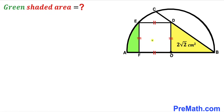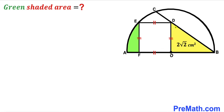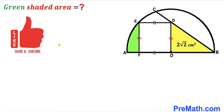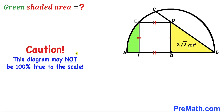Welcome to pre-math. In this video we have got a white square ODEF fully inscribed in between a semicircle with center O and chord BC. As a result we get a yellow shaded triangle BOD, and the area of this yellow shaded right triangle has been given to us as 2√2 cm². Our task is to calculate the area of the green shaded region. Please keep in mind that this figure may not be 100% true to scale.